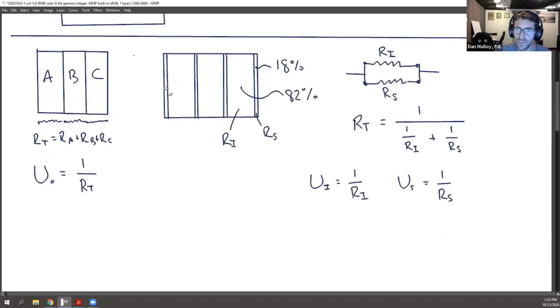And when you have two things going on in parallel, you're offering additional paths. So they help each other. So that's why these can be added linearly. So U overall could be said to be U for the insulation plus U for the studs.